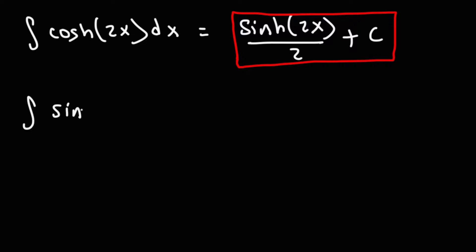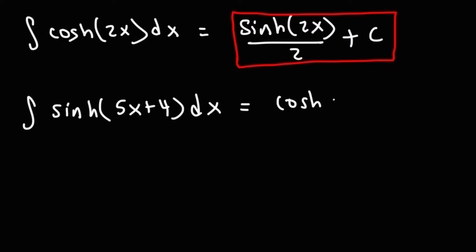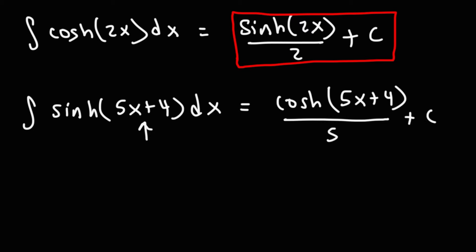Try this one: find the indefinite integral of hyperbolic sine of 5x plus 4. The integral of hyperbolic sine is going to be hyperbolic cosine, and the inside stays the same. Because we have a linear function, we divide by the derivative of 5x plus 4. The derivative of 5x is 5 and the derivative of the constant 4 is 0, so the answer is one-fifth hyperbolic cosine of 5x plus 4, plus C.